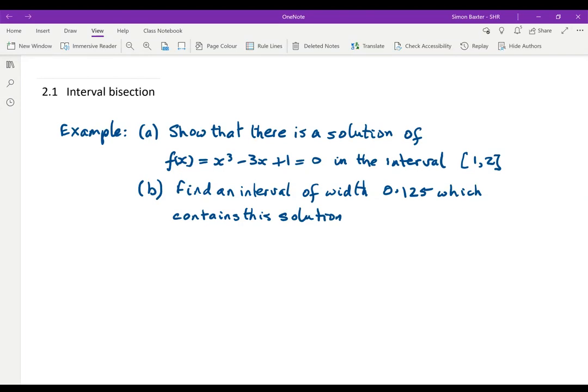In this video we use a technique called interval bisection to find approximate solutions to equations of the form f(x) equals naught. Best illustrated I think with an example. So we start off with this.